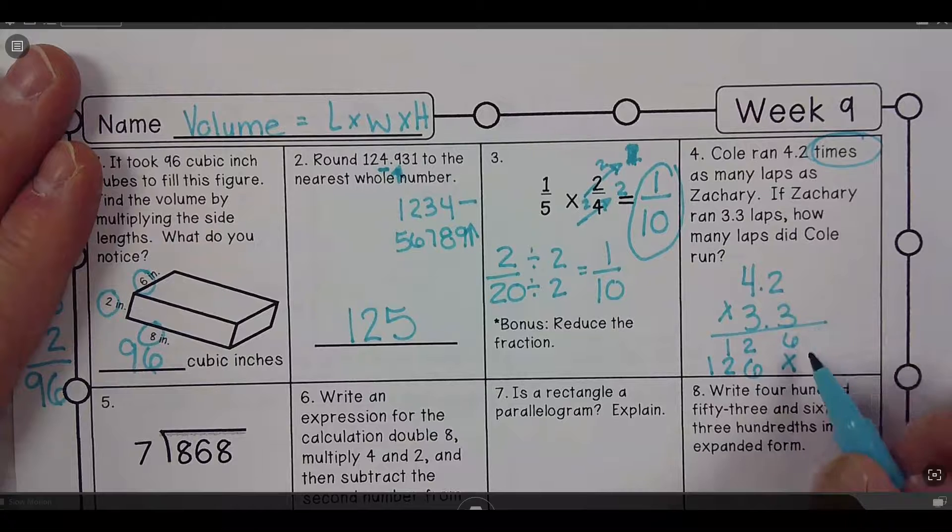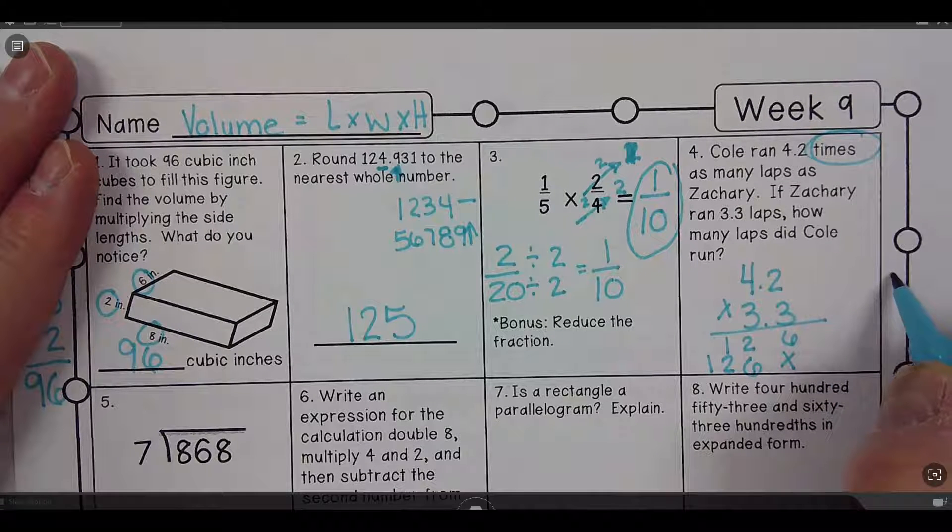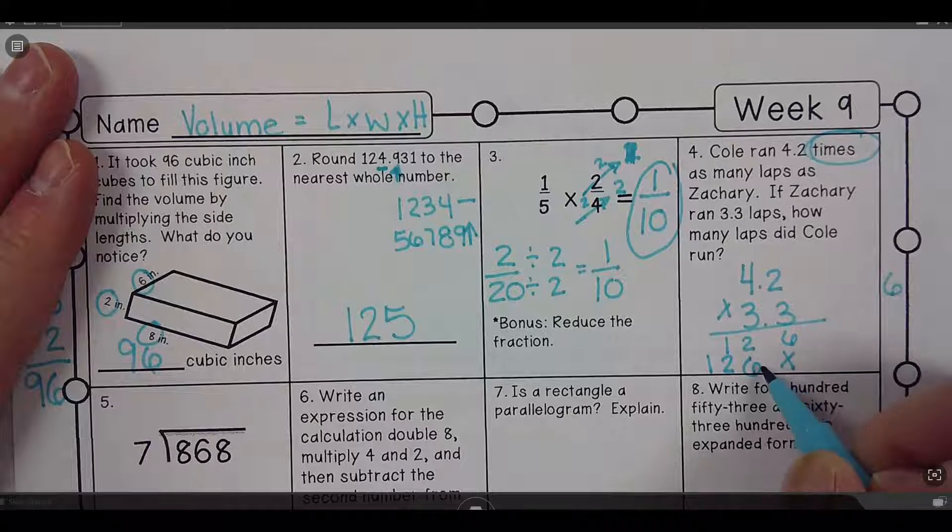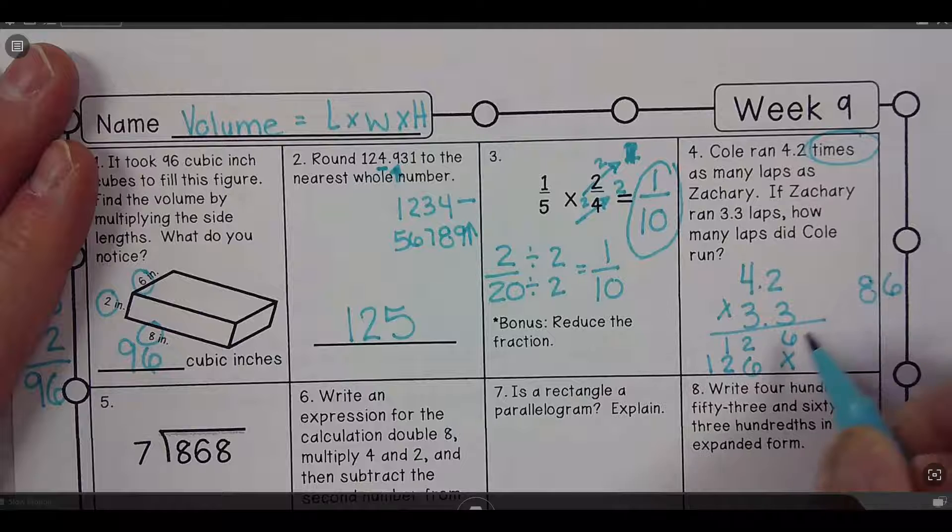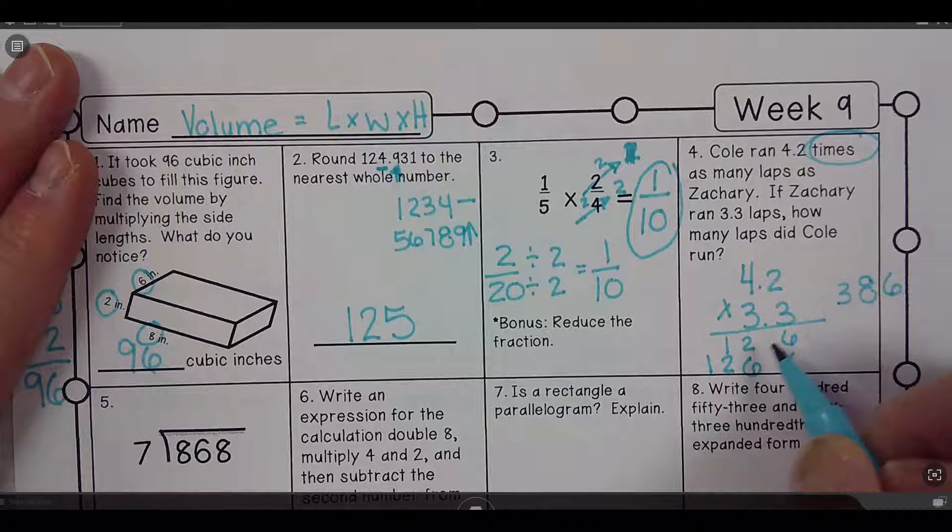So then I'm gonna add them up. So it's gonna be 6. 2 plus 6 is 8. 1 plus 2 is 3. And then 1.